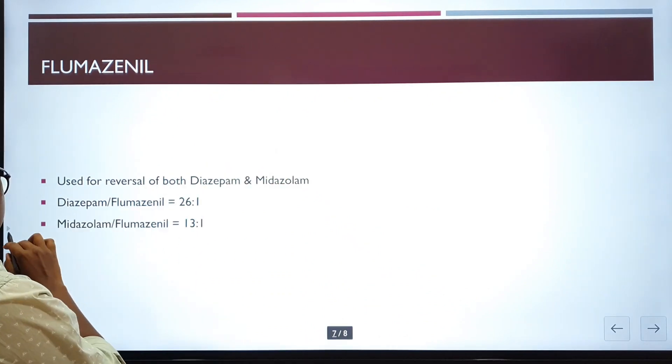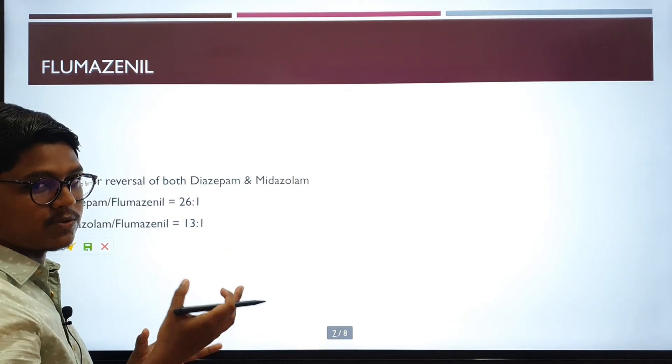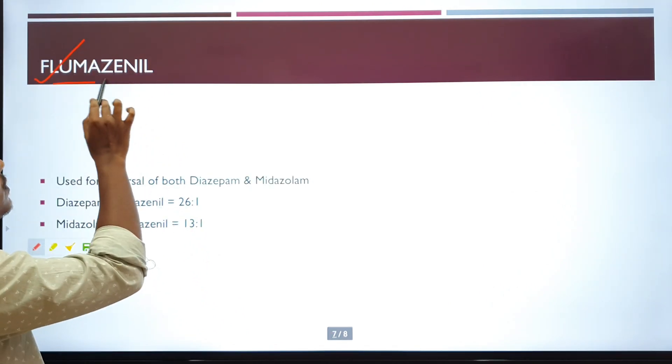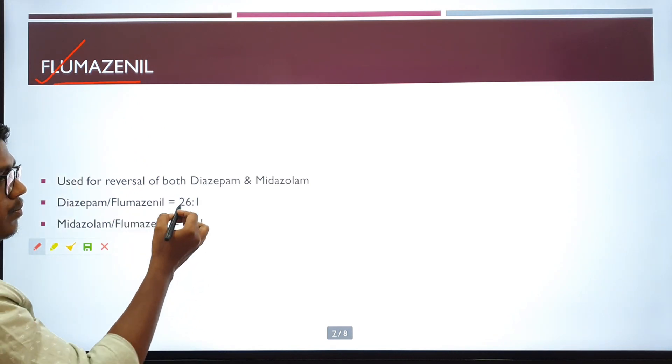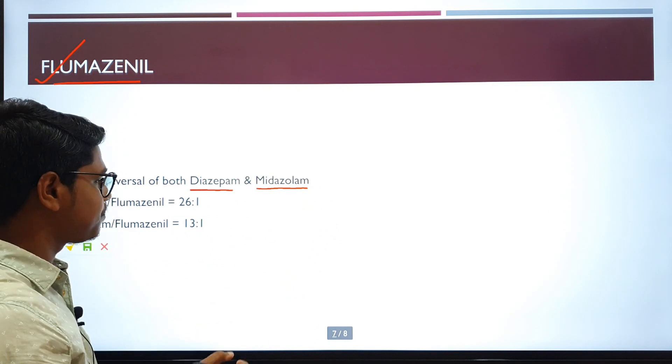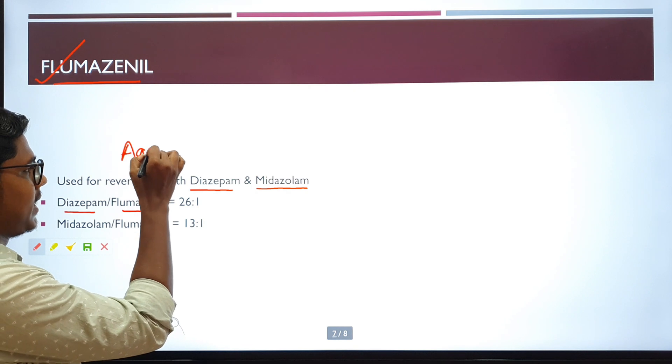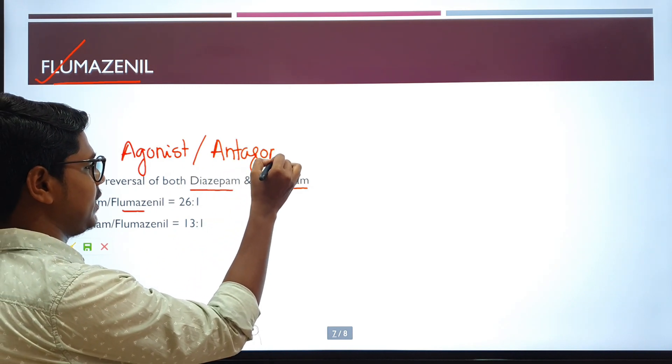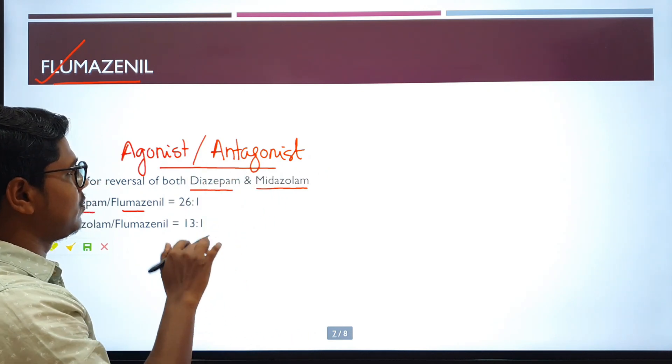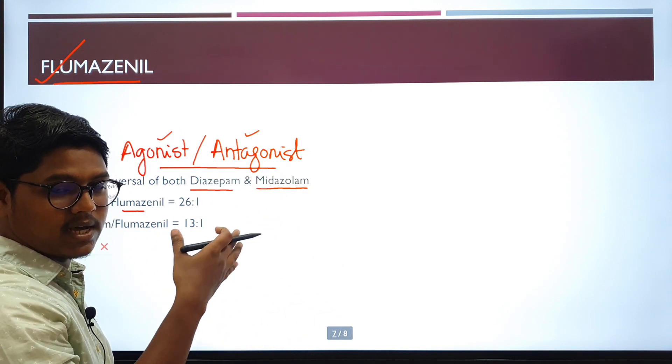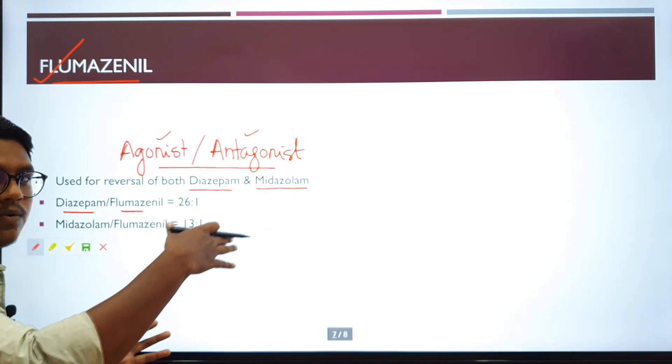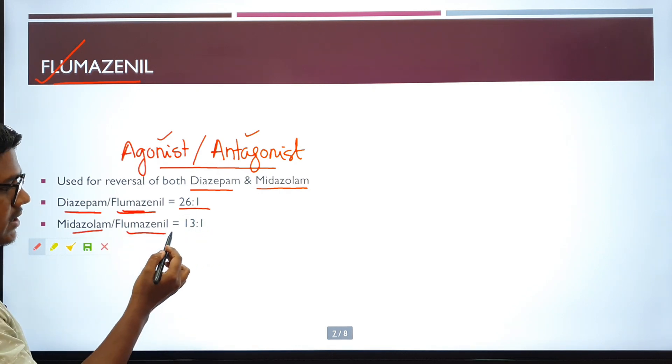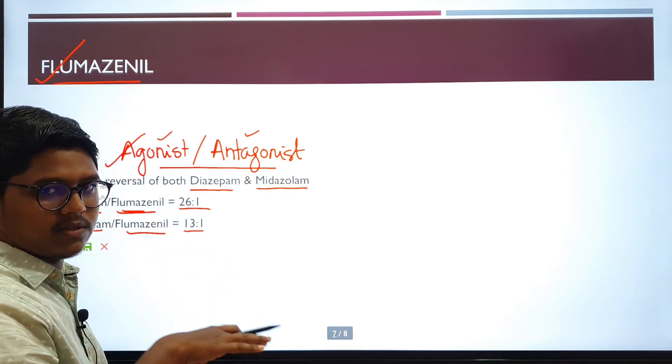Now we will come to the benzodiazepine antagonist. The availability of an antagonist makes it even safer. First, they have very minimal effect on the cardiovascular system, and second is the availability of this antagonist. The only approved drug is flumazenil, used for reversal of both diazepam and midazolam. The agonist to antagonist ratio: I already made a video on alpha-2 agonists about the importance of the agonist to antagonist ratio. If you haven't watched that video, please watch it for this concept, how the agonist and antagonist ratio, and the time relation between when the anesthetic or sedative was given and when you are administering the antagonist. So diazepam to flumazenil ratio is 26 to 1, while midazolam to flumazenil ratio is 13 to 1. I will give a link regarding the agonist to antagonist ratio in the comment section.